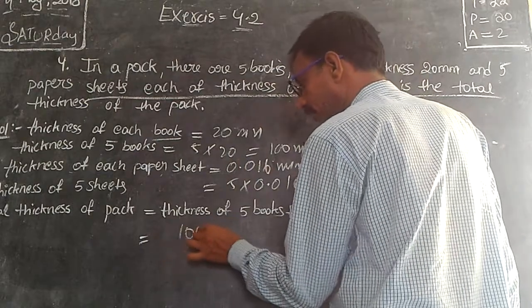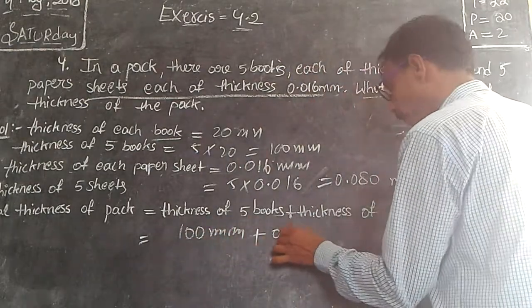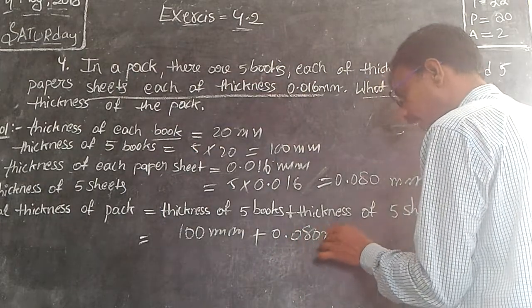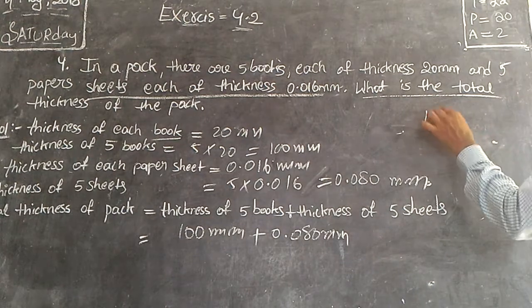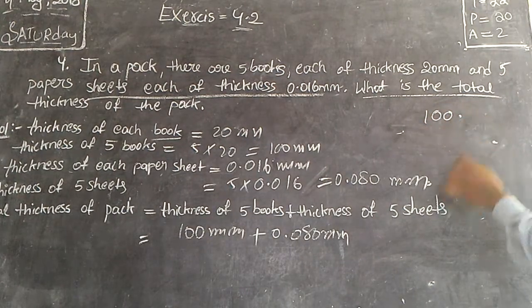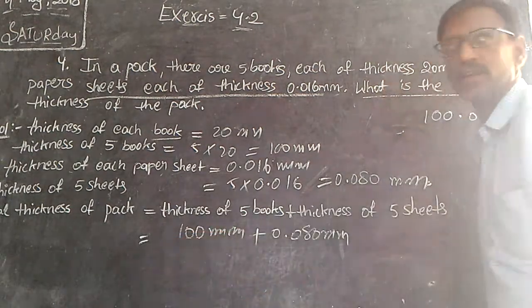What is the total thickness of the pack? 100 mm plus 0.080 mm equals 100.080 mm. This is the total thickness of the pack.